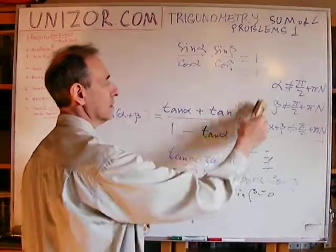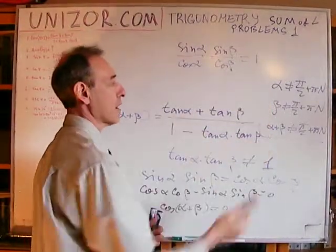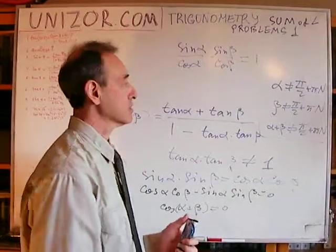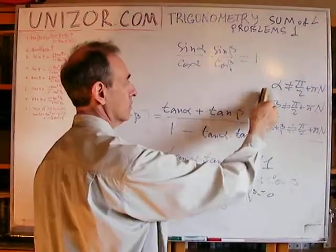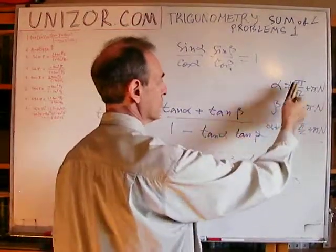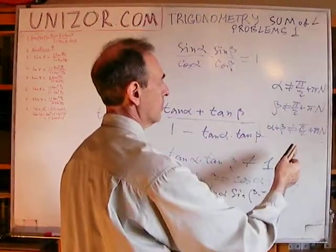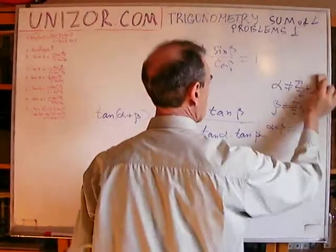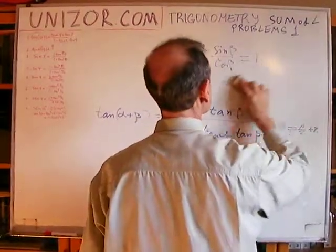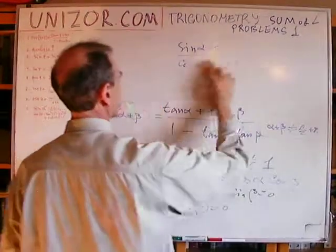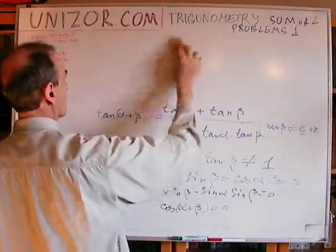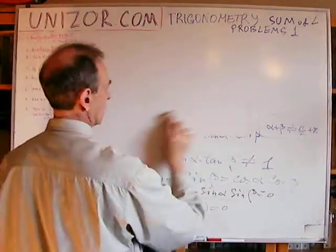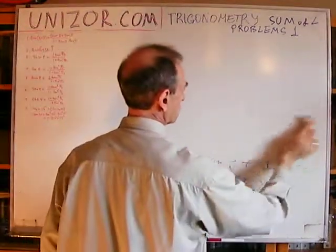So the denominator equaling zero presents no additional restrictions on the angles. The angles are still restricted by the three inequalities: none of alpha, beta, or alpha plus beta should equal π/2 + πn. That completes the analysis of the formula for tangent of the sum of two angles.